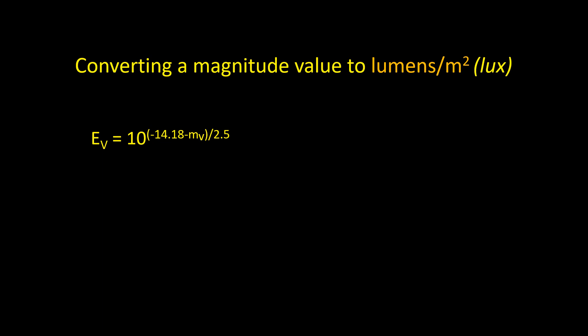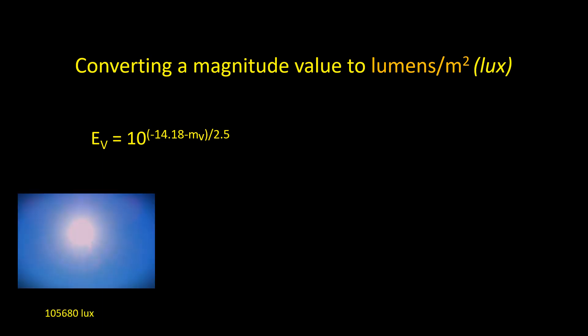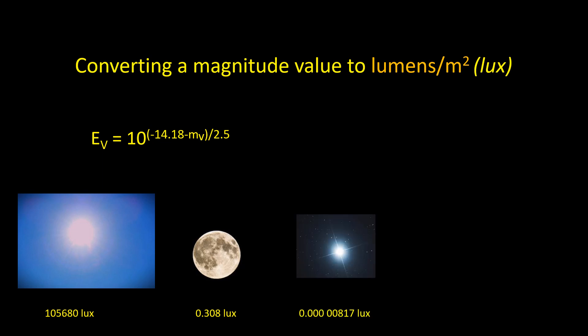The illuminance of the sun is 105,680 lux, a full supermoon is 0.308 lux, and the brightest star Sirius 8.17 times 10 to the power of minus 6 lux which is 13 billion times less than the sun. For comparison, the illuminance 2 meters away from a 1500 lumen household light bulb is 29.8 lux, assuming its light is spread out equally in all directions.